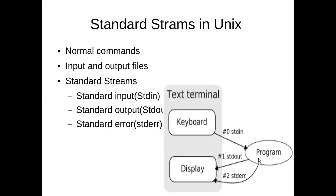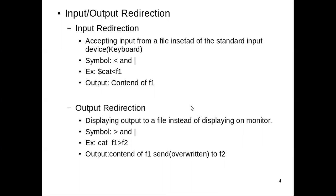So standard streams are the pre-connected channels between the program and your standard input/output devices. stdin stream file contains the input to the program, stdout stream file contains output from the program, and stderr stream file contains error messages from the program. We are taking input from the keyboard and producing output on the screen. Suppose we want to read the input from a file and display the output into a file, not on the screen. For that we use input/output redirection. The process of redirecting input or output to a file instead of the standard input/output devices is called input/output redirection.